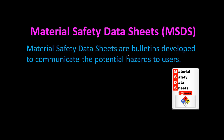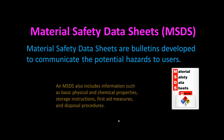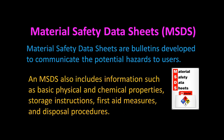MSDS stands for Material Safety Data Sheets. They are bulletins developed to communicate the potential hazards of chemicals to users. MSDS also includes information such as physical and chemical properties, storage instructions, first aid, and disposal procedures.